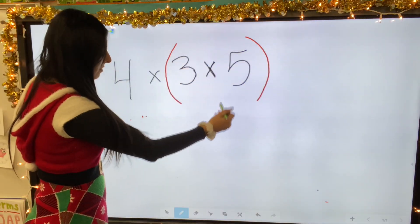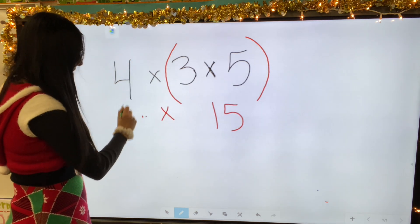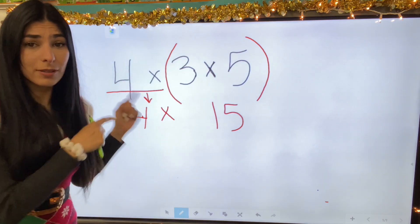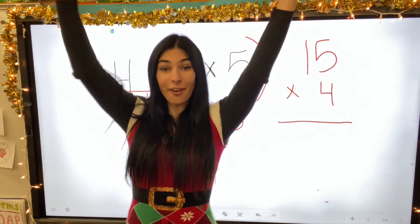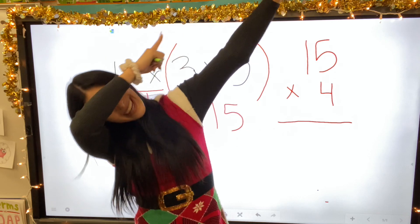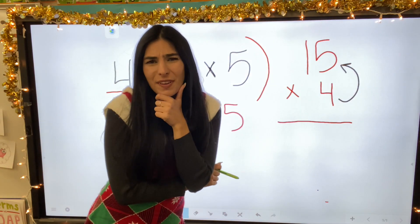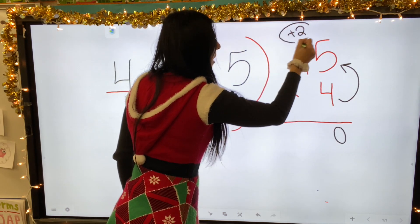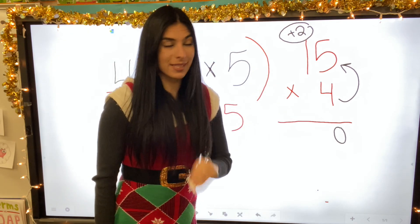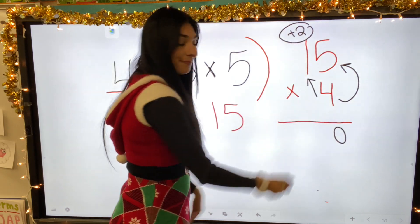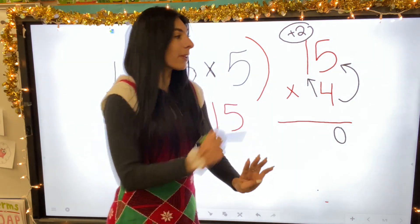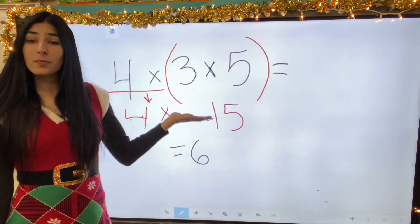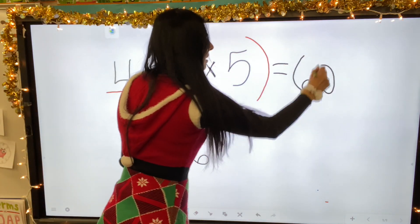Let's solve the parentheses first: three times five equals fifteen. We bring that four down and multiply fifteen times four. Because it's a double digit, let's make it vertical. Times up: five times four is twenty — put the zero in the ones place and carry the two. Times diagonal: four times one is four, plus two equals six. So four times three times five still equals sixty.